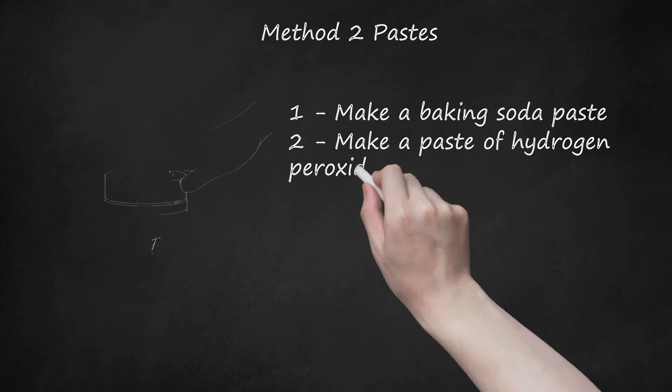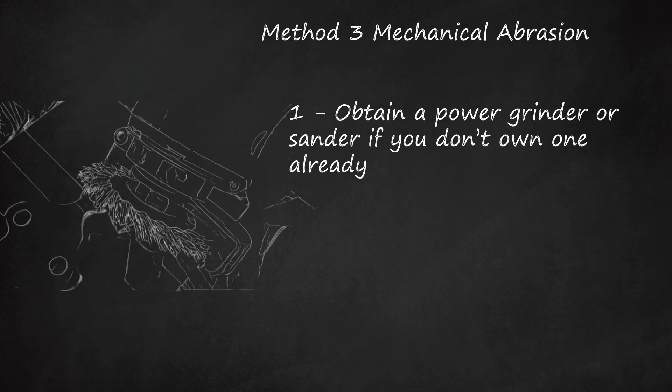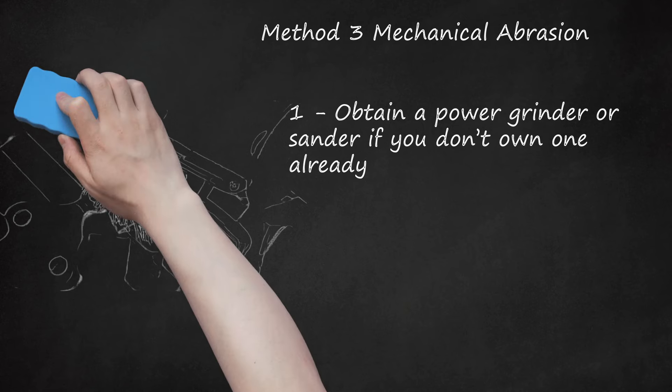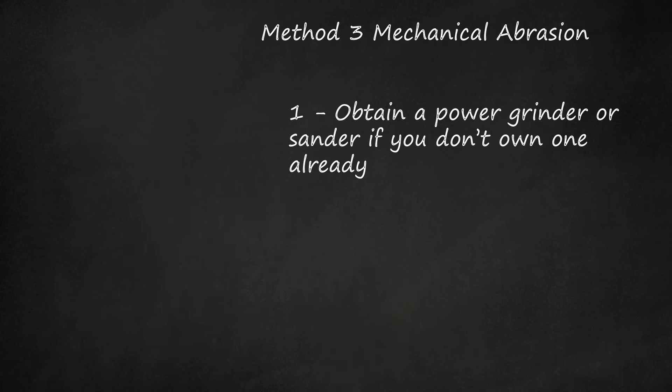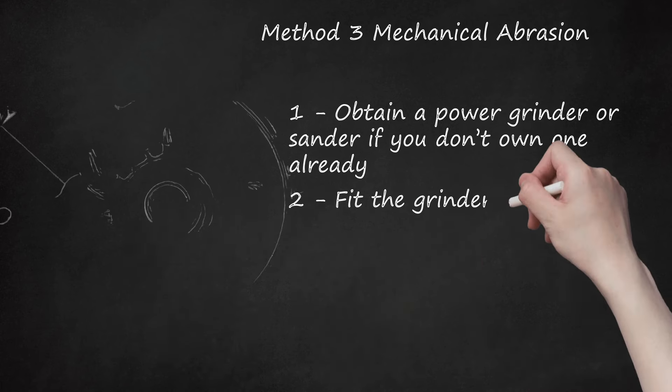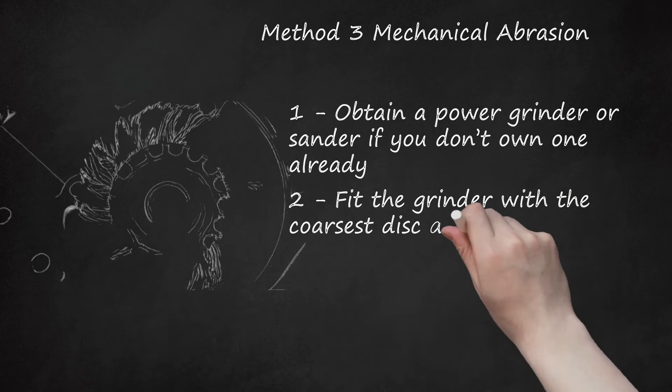Method 3: Mechanical Abrasion. First, obtain a power grinder or sander if you don't own one already. They are readily available at any hardware store, although since they are power tools, they are likely to have hefty price tags. Many hardware supply stores such as Ace Hardware and the Home Depot rent out such tools for a significantly smaller fee. Power grinders are particularly useful for larger rust-covered surface areas such as on old cars.